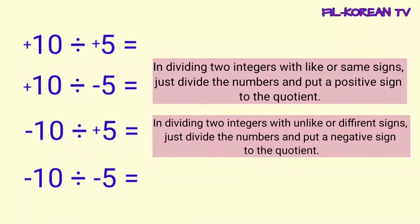In dividing two integers with unlike or different signs, just divide the numbers and put a negative sign to the quotient. Kapag mag-divide naman tayo ng dalawang integers na magkaiba ang sign, i-divide lamang natin yung numbers at lalagyan natin ng negative sign yung quotient o yung answer.